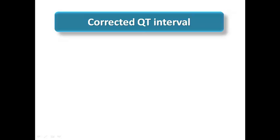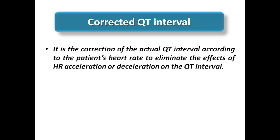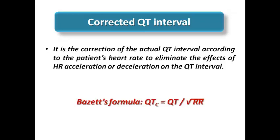Regarding the corrected QT interval: the actual QT interval starts from the beginning of the QRS complex until the end of the T-wave, and it is dynamic — affected by heart rate. A slower heart rate produces a longer QT interval and vice versa, so we must correct it. The most common formula is Bazett's formula: corrected QT = QT divided by the square root of the RR interval, where the RR interval is in seconds and the QT interval is in milliseconds.